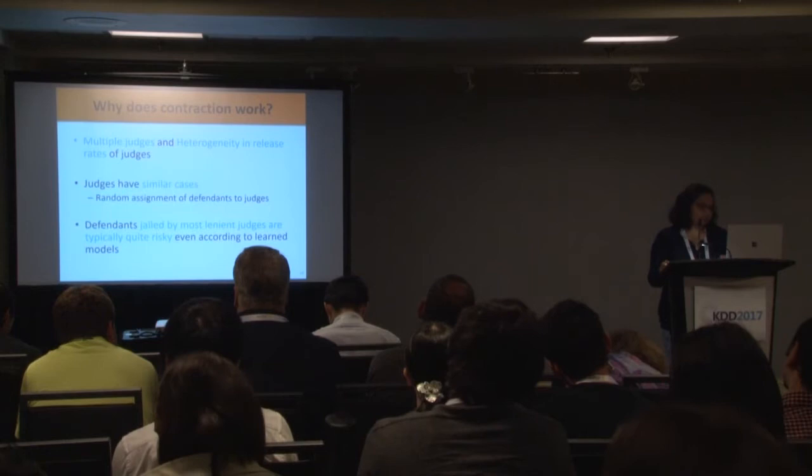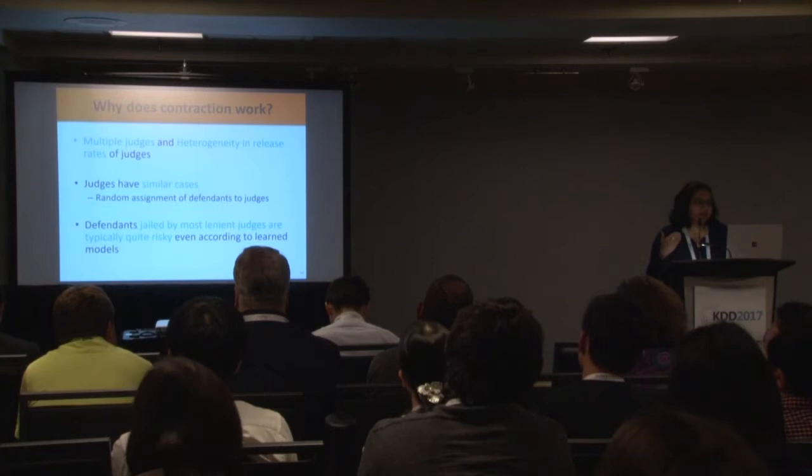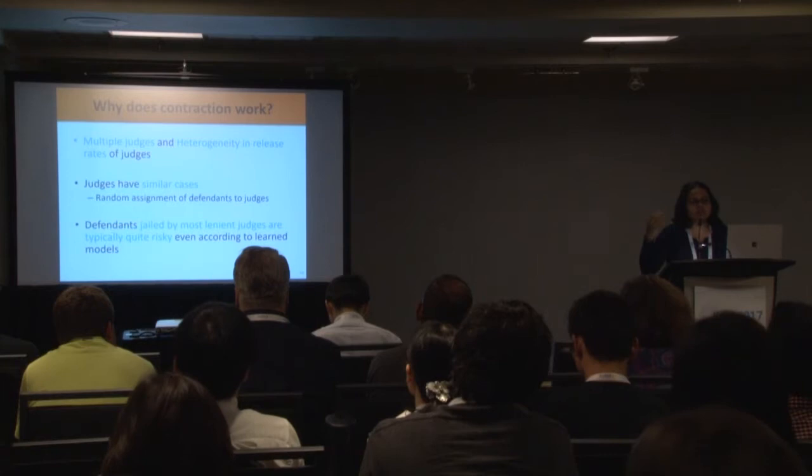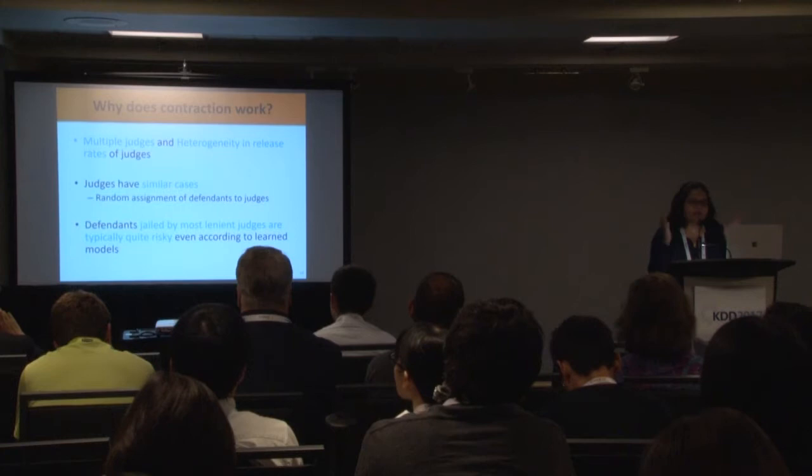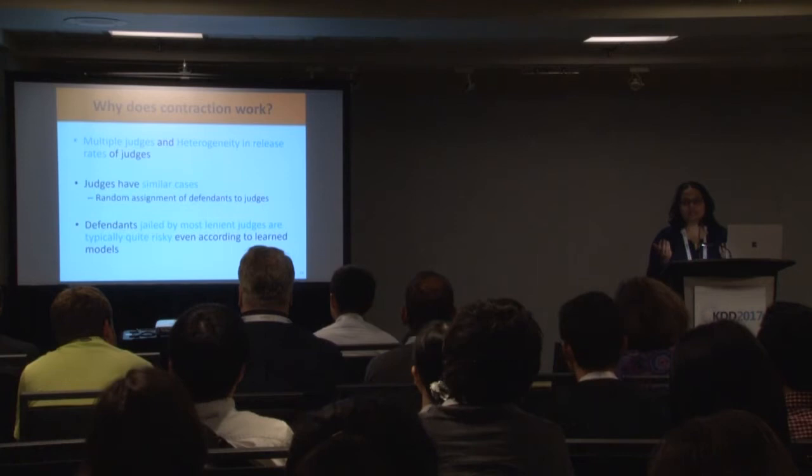The third point, which we have seen in the real world and which allows contraction to perform well empirically, is that defendants jailed by the most lenient judges are typically so risky that most algorithmic models assign them very high risk scores. This means the agreement rate on who to jail is generally high in real world settings.